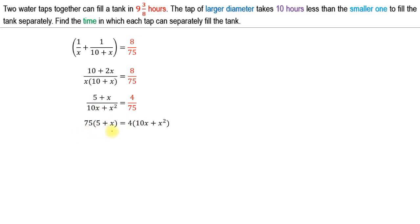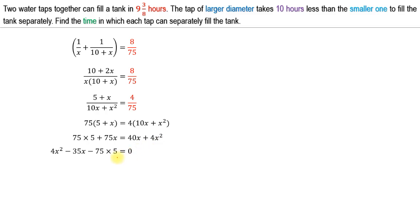Cross-multiplying gives 75(5 + X) = 4(10X + X²). Multiplying term by term: 375 + 75X = 40X + 4X². Taking all terms to one side gives 4X² − 35X − 375 = 0.